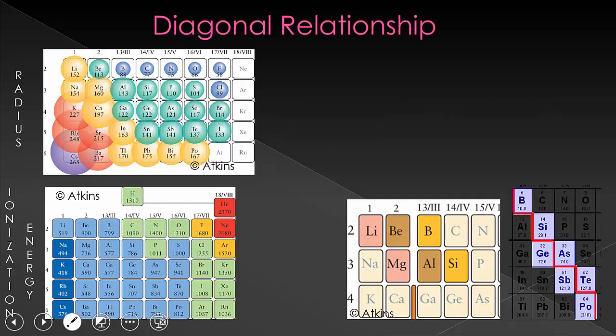The diagonal relationship describes the observation that elements on the diagonal shown in these pictures, such as here and here, and really any of these, have similar properties.